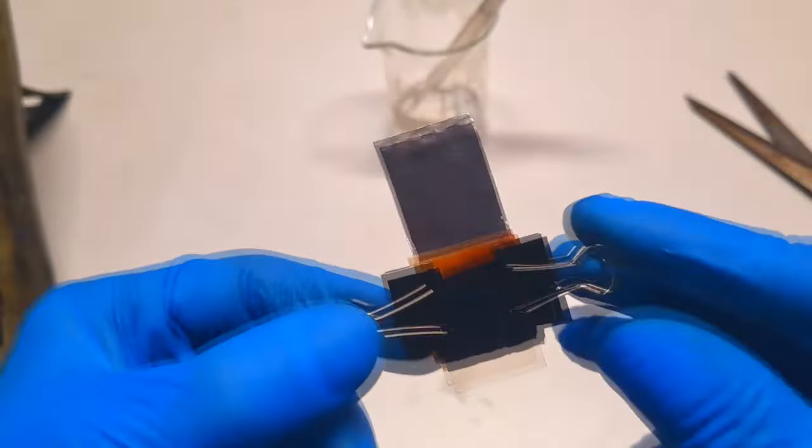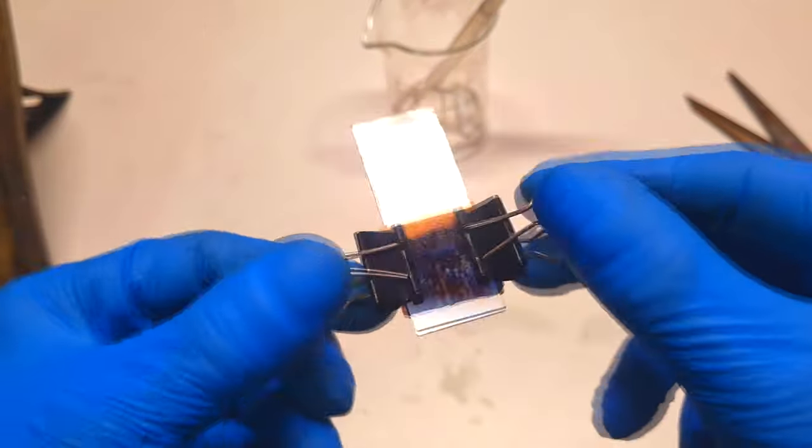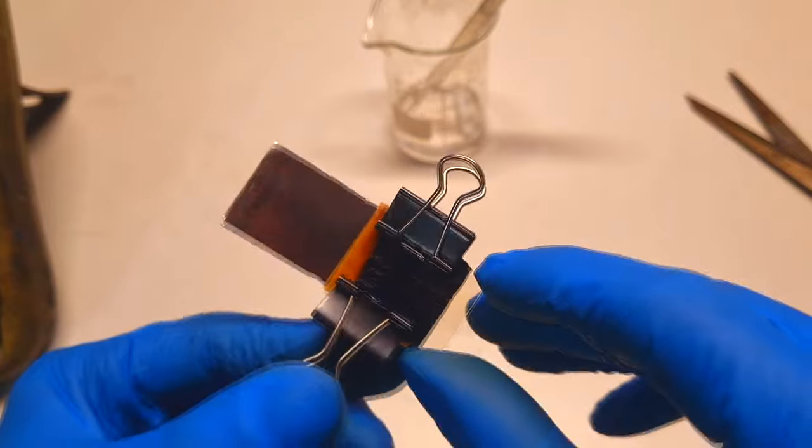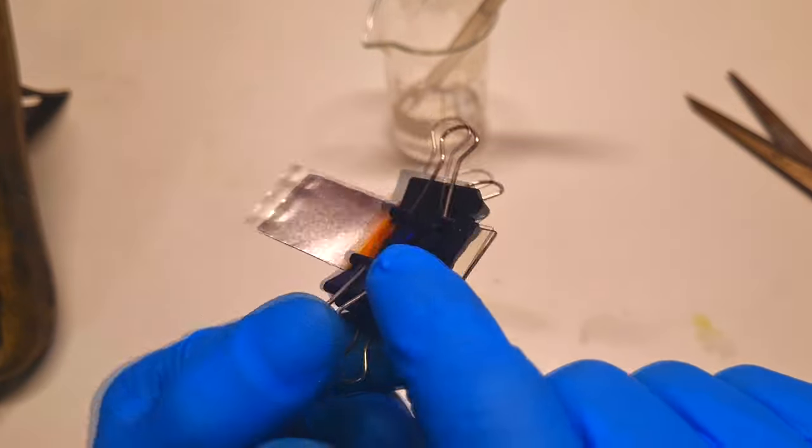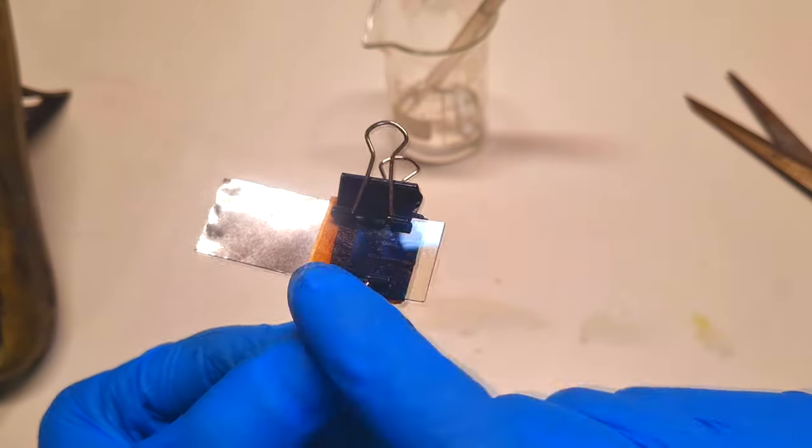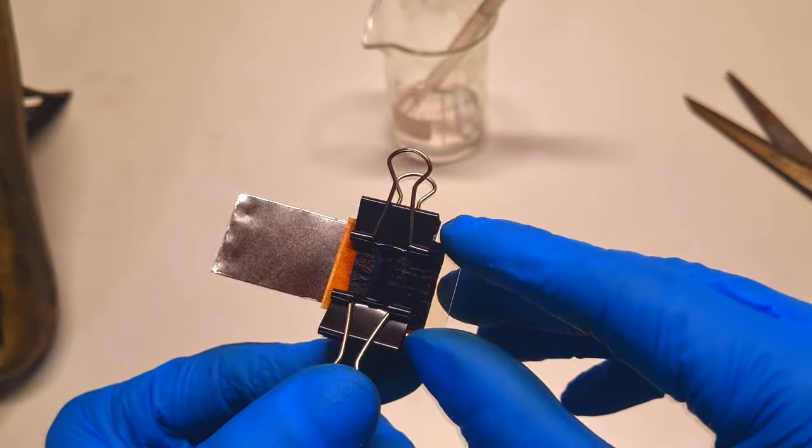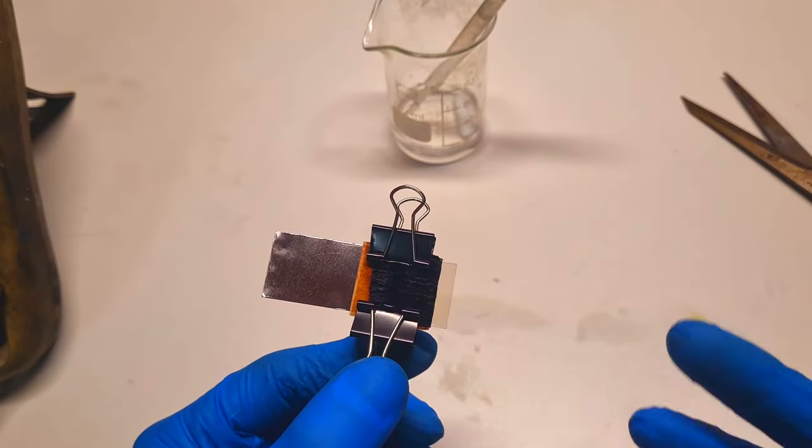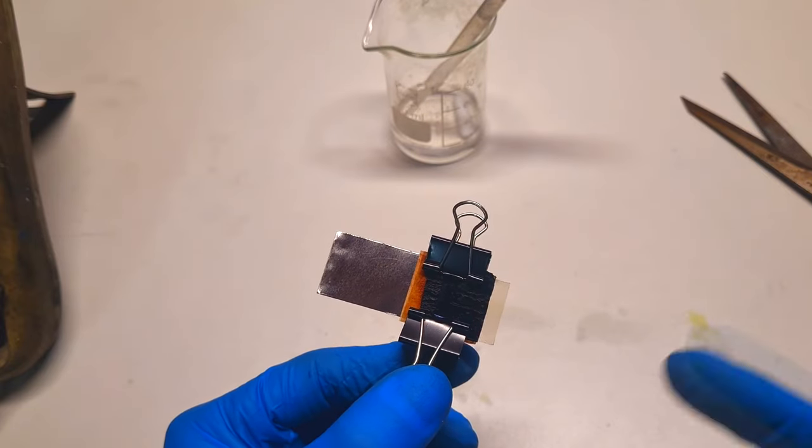And here I have my self-charging solar cell. So right now this cell is charged, which means that here on the positive side we have this Prussian blue which is in blue color. But when this cell is discharging, then this Prussian blue will turn into some Prussian white.